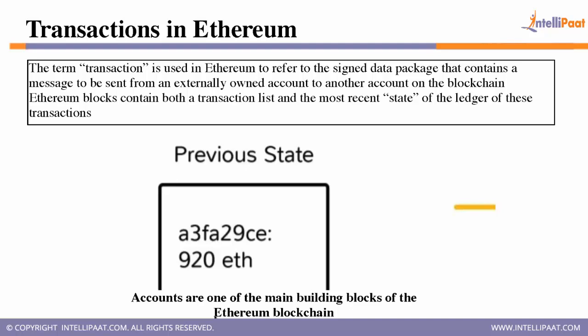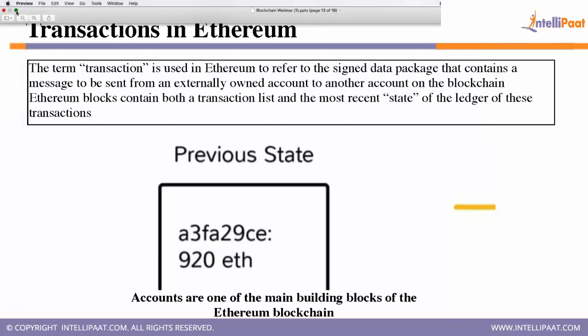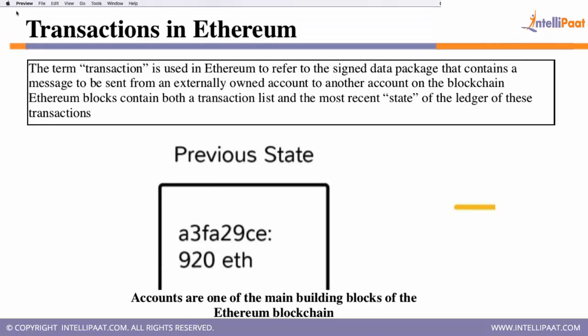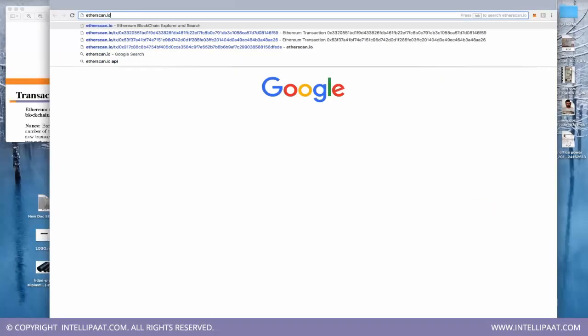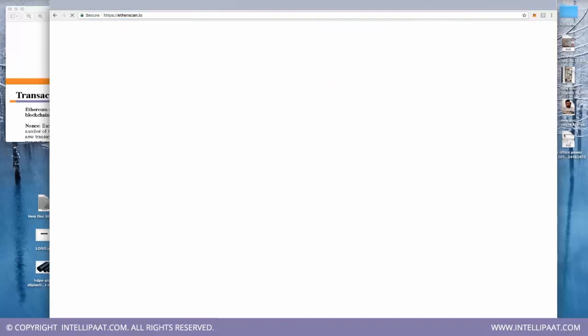The term 'transaction' in Ethereum refers to a signed data package that contains a message to be sent. There are two types of accounts in the Ethereum blockchain: an externally owned account (EOA), which is your personal account, and a contract account, which is a smart contract account. All information from public blockchains can be found on etherscan.io.